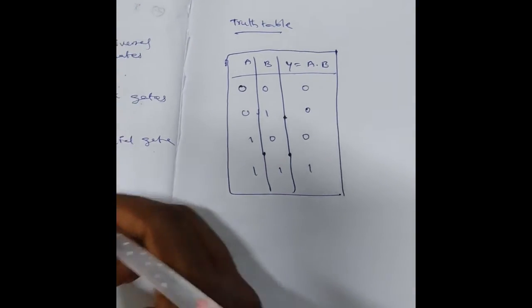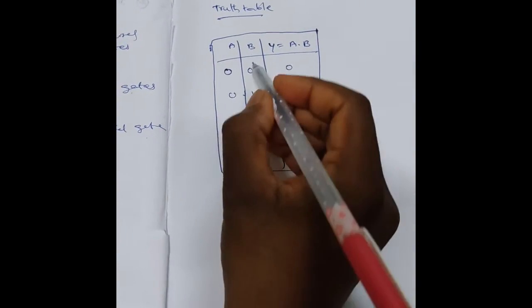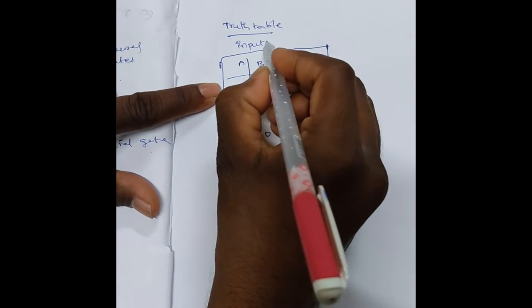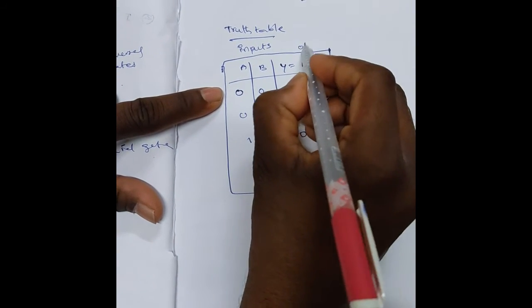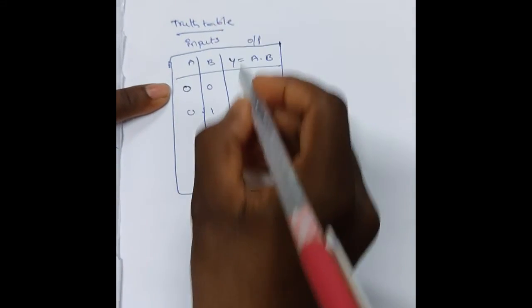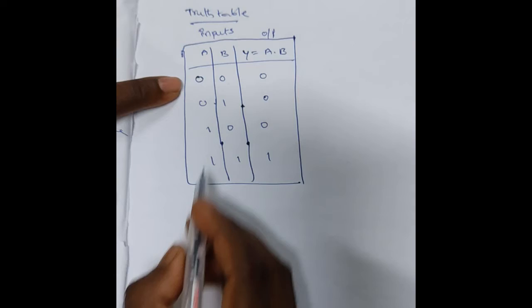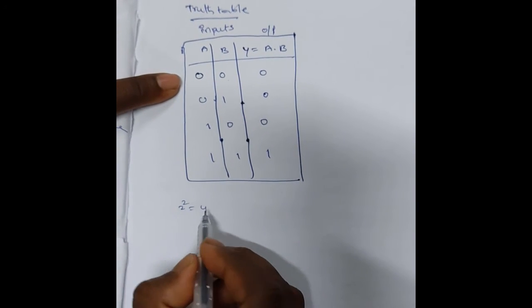Next, by varying the inputs. This is the truth table of AND gate. Y is the output and A and B are the inputs. With 2 inputs, we have 2 to the power 2, that is 4 combinations.